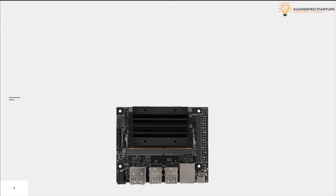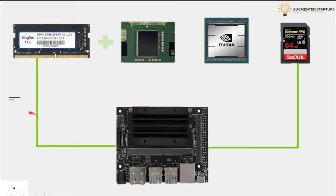Just like a normal computer, it contains the main memory along with the CPU. It also has a GPU that makes it powerful enough to execute machine learning models. For the purpose of backup, we have an SD card that can be used as external memory to store permanent data. So these are the major components of a Jetson module.